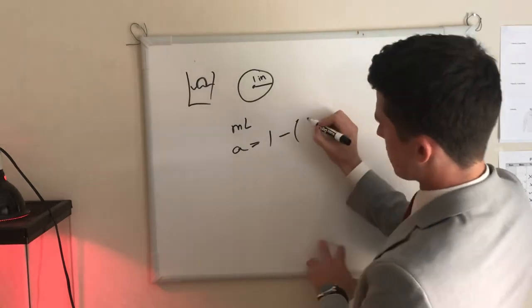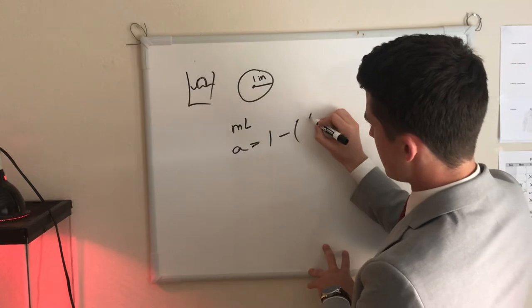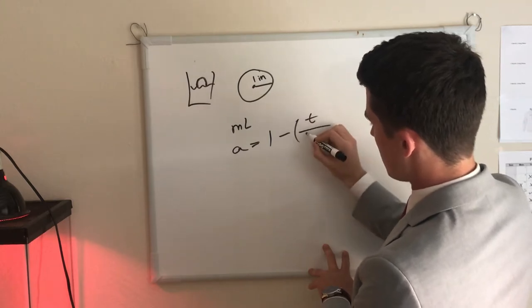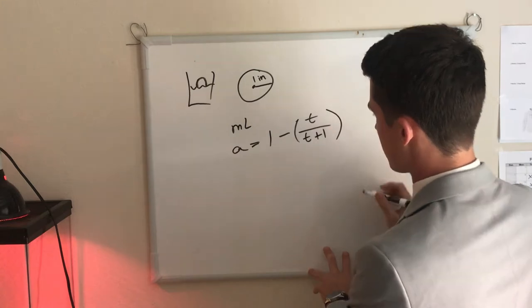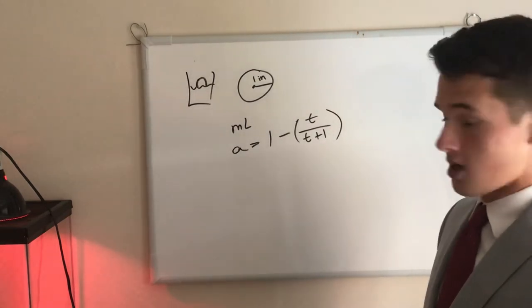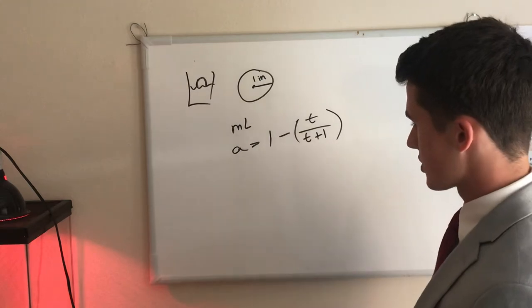And then up on top, we have time over time plus one, okay? So one milliliter minus time over time plus one.